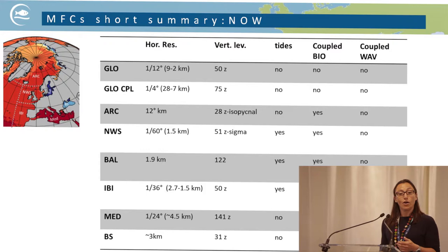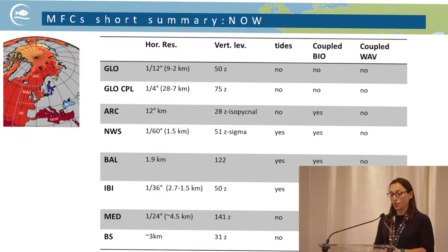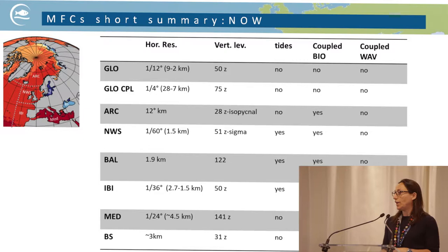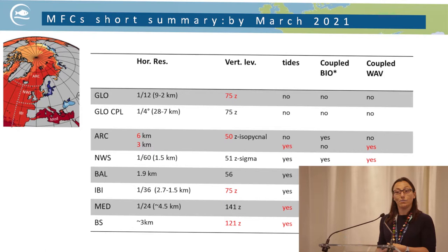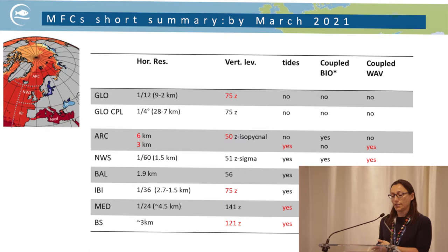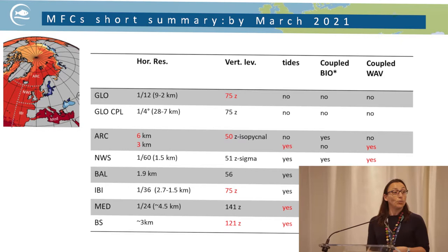Looking at how the systems will evolve through the end of the Copernicus contract, the Arctic system is going from 12 km to 6 and 3 km horizontal resolution — a significant increase. Some systems are also increasing the number of vertical levels. The major development is increased complexity: adding components so that all regionals will eventually have tides and increased connections with biogeochemical and wave components.